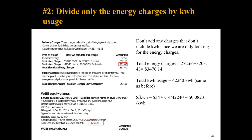Now let's look at the other method. We're going to look at the energy charges — any charges that would change when the kilowatt hour or energy usage increases. Looking at the bill, the first distribution charge is dependent on kilowatts, which is power. So that's a power charge and we're not going to include that in our calculation.